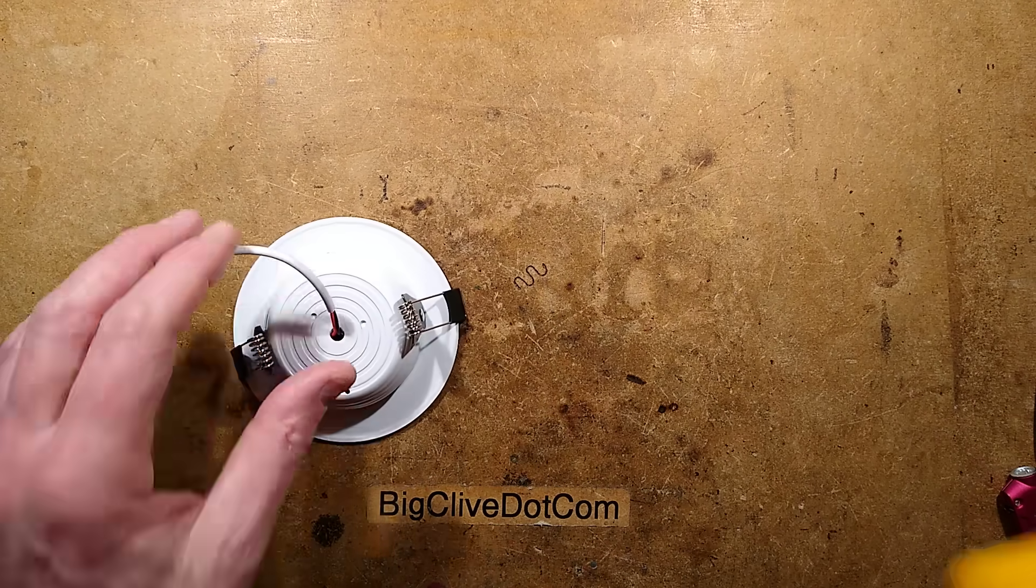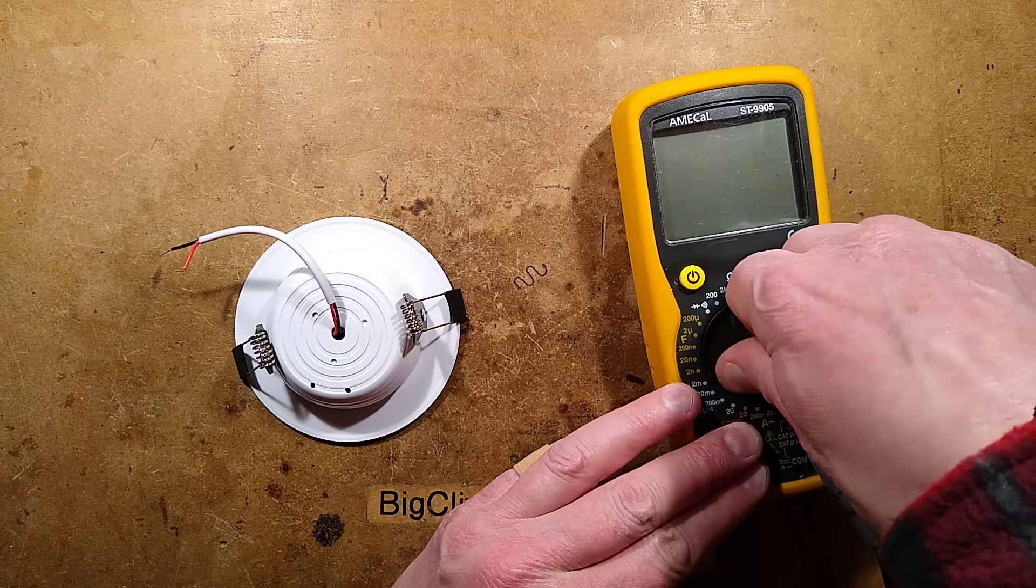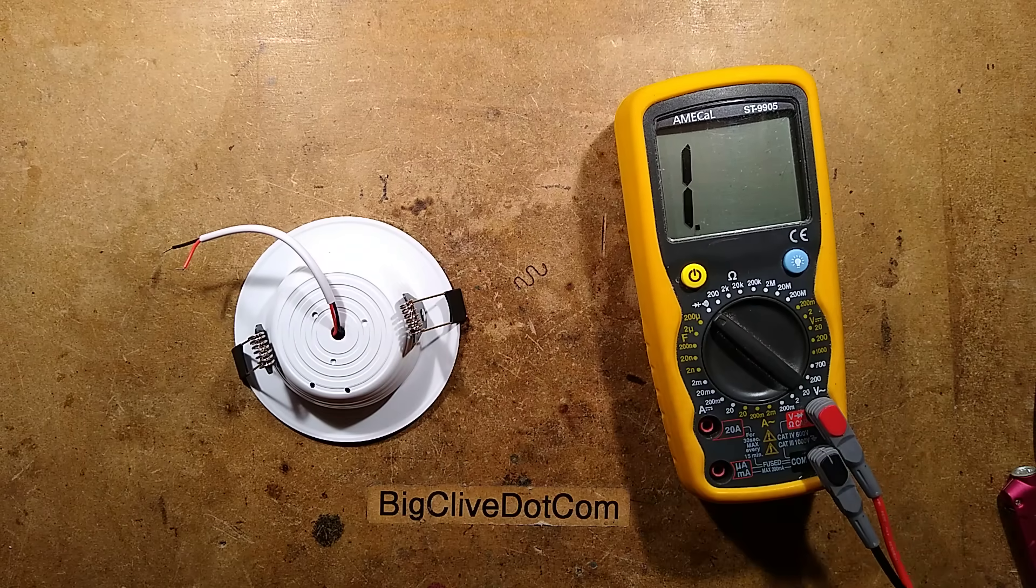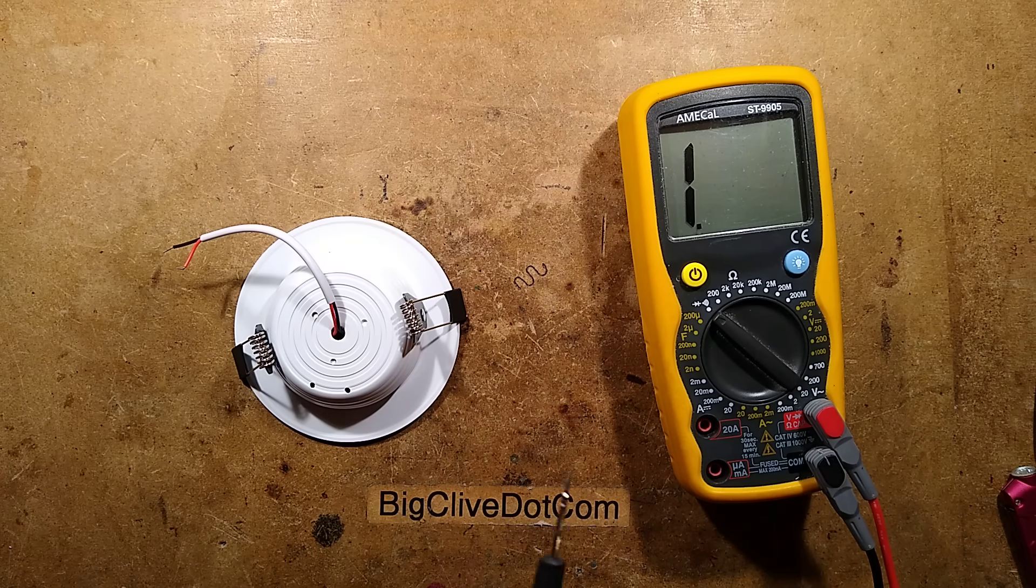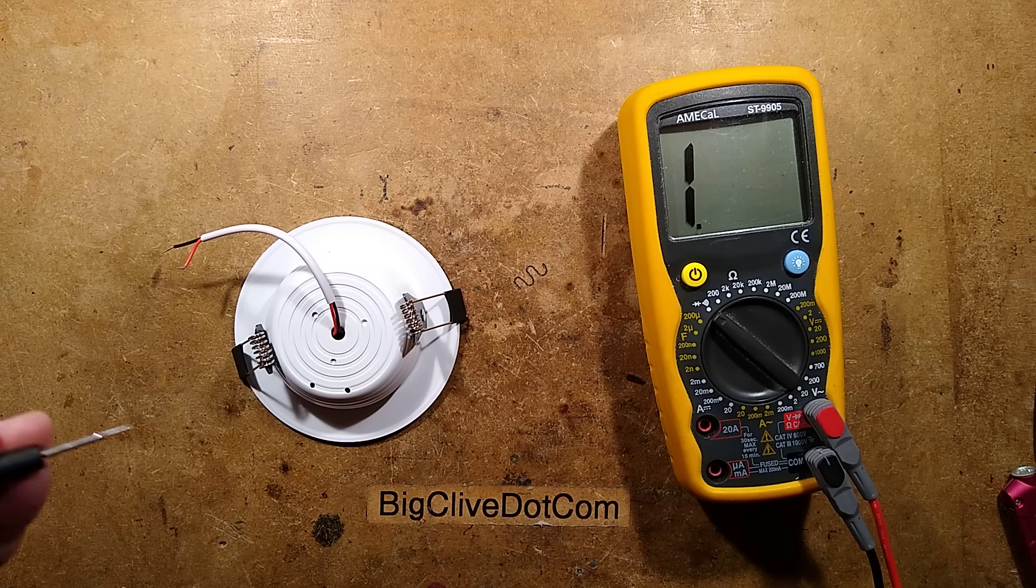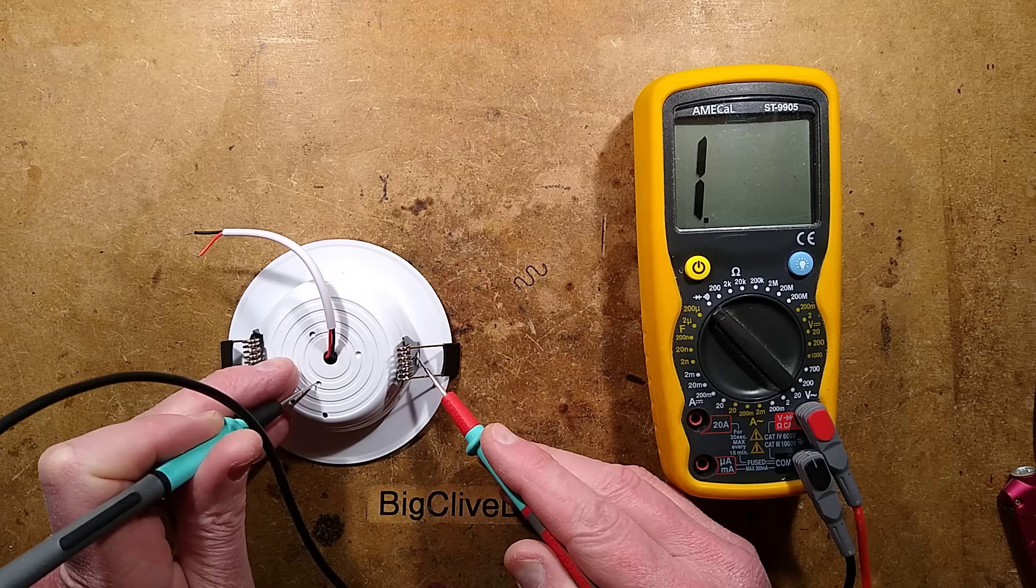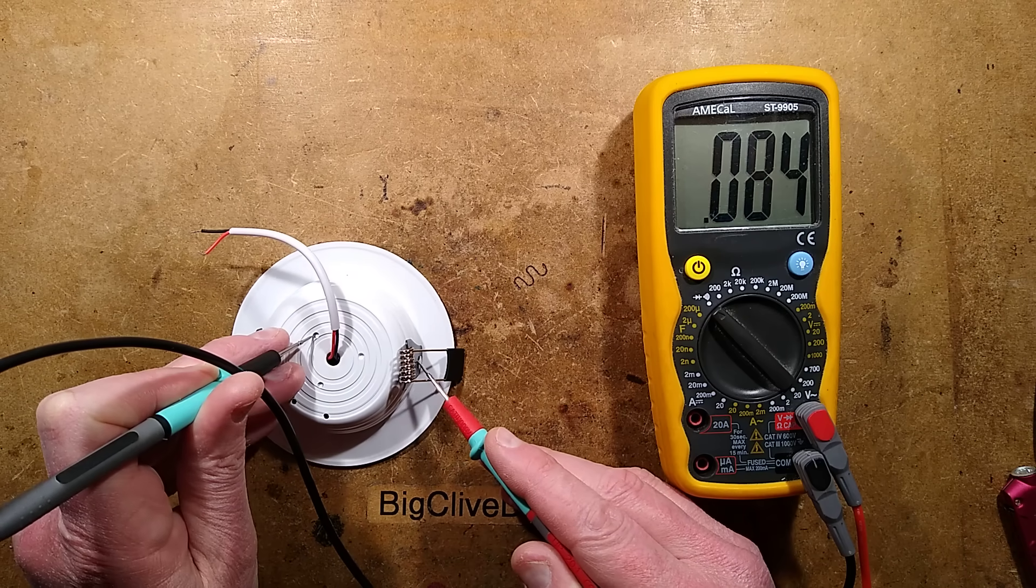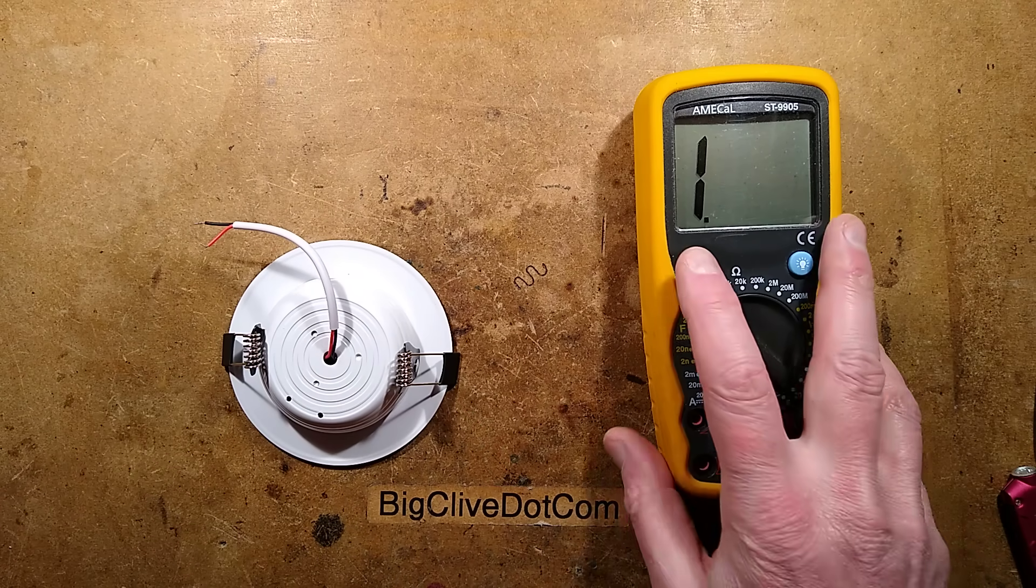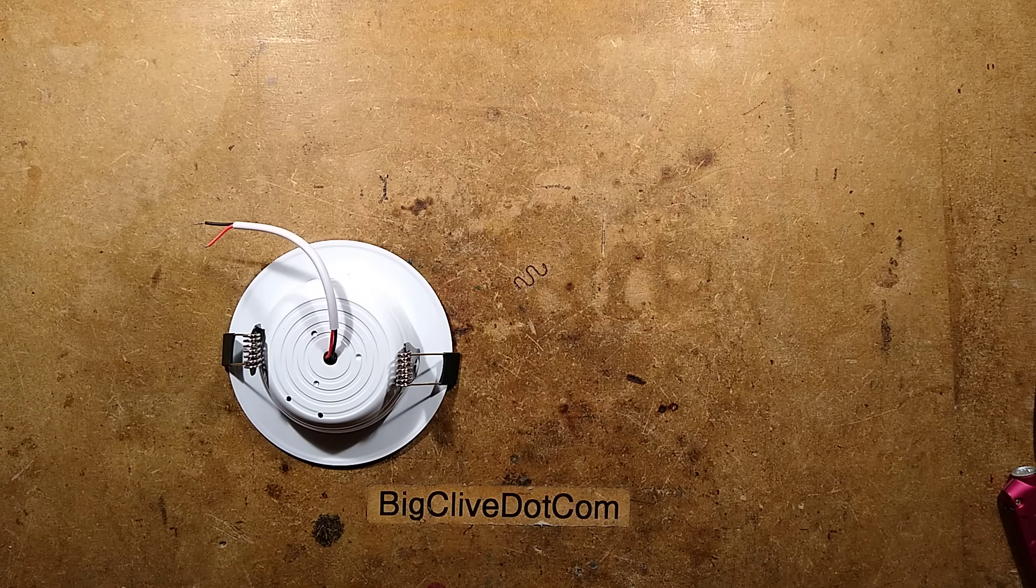So just to prove this is metal, let's bring in the meter and we'll put it to continuity. And I'll go from, say, here, which is metal. I've just caused an avalanche here. And it is all metal. This means that when the little module inside fails, there is a slight possibility of the metal becoming live.